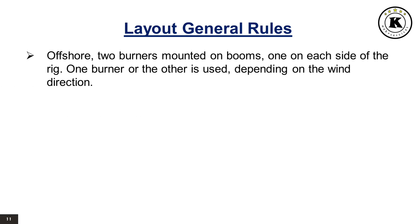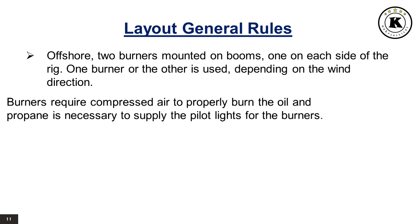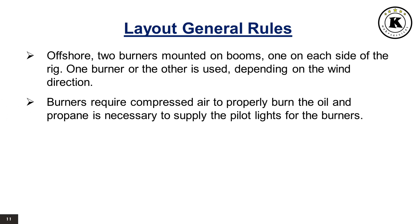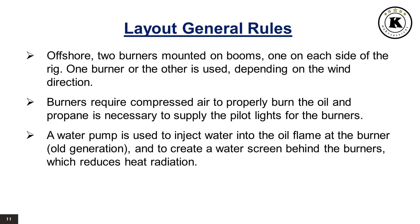Offshore, two burners are mounted on booms, one on each side of the rig. One burner or the other is used depending on the wind direction. Burners require compressed air to properly burn the oil, and propane is necessary to supply the pilot lights for the burners. A water pump is used to inject water into the oil flame at the burner (old generation) and to create a water screen behind the burners, which reduces heat radiation.